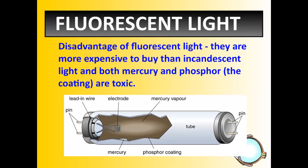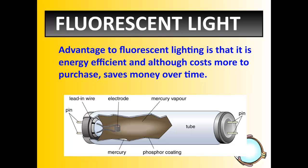Two things about fluorescent light: there are severe disadvantages and equally severe advantages to using these. Disadvantages — they are more expensive to buy than incandescent light; a regular bulb might be a dollar versus six or twelve dollars for a fluorescent. Also, the mercury and phosphor inside are toxic, so when those bulbs break they're supposed to be vented to outside air so you're not inhaling it. However, the advantages are that fluorescent lights are energy efficient, and although they cost more to purchase, they last much longer, so you're saving money over time.